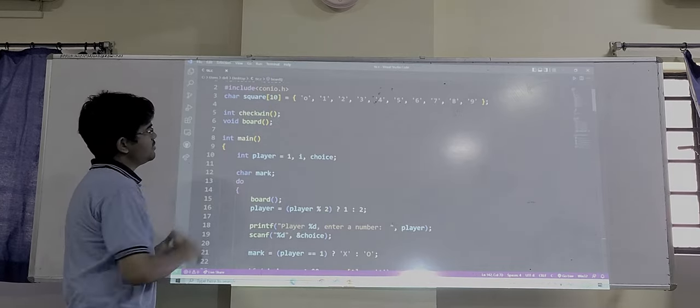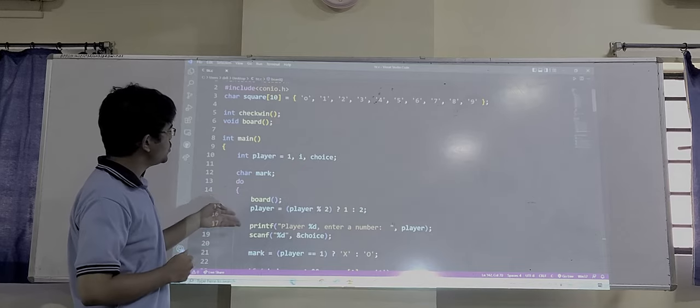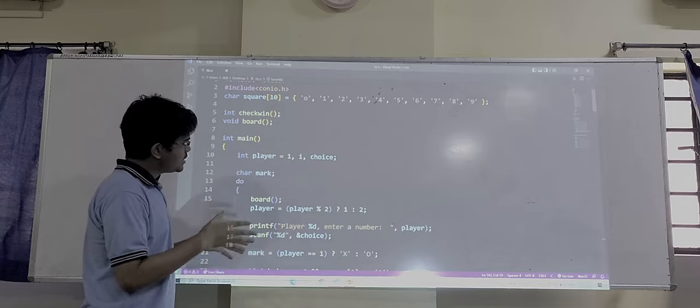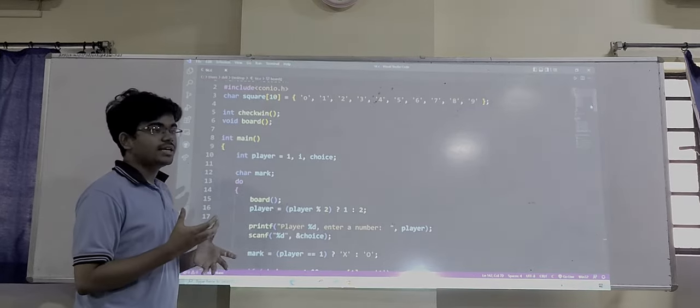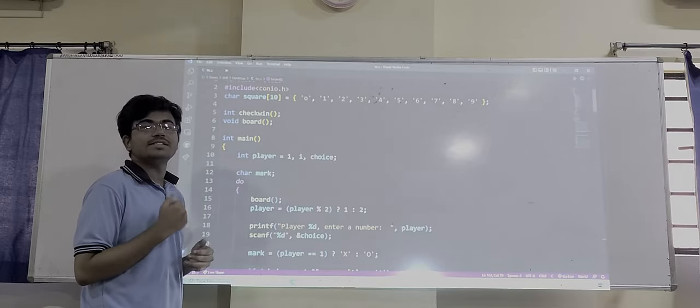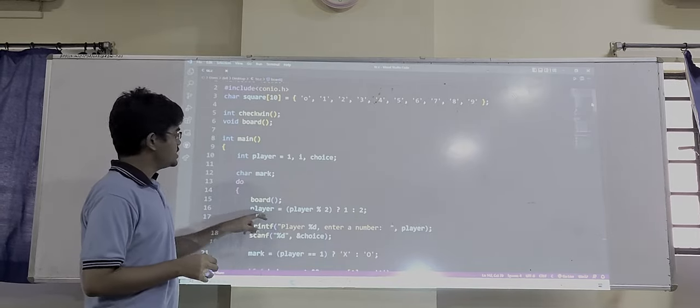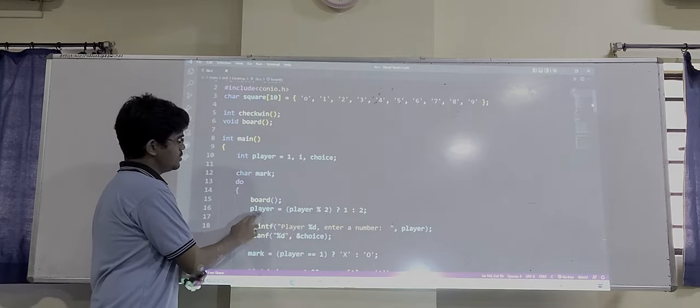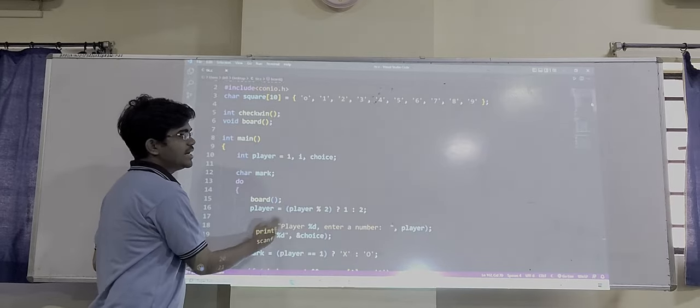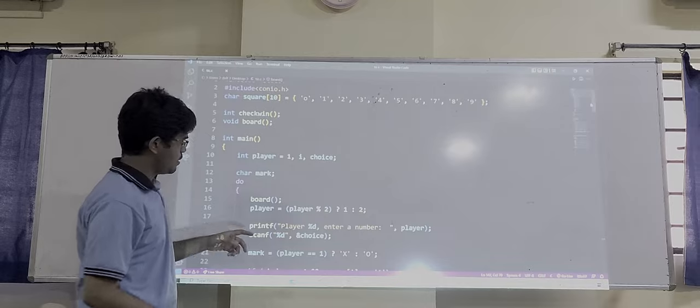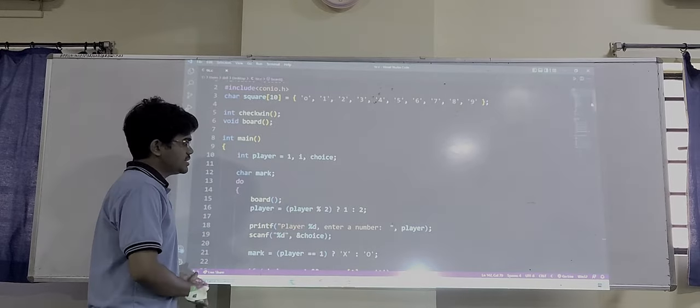Coming to the main function, we will declare the variables, player of integer type and mark of character data type. Inside the do-while loop, we need to assign the player, player 1 or 2. The first player is player 1 and the second player is player 2. Here is the ternary operator. Player equals player modulo 2 plus 1. This is the left-hand side, and right-hand side is player modulo 2, which gives us the remainder. If both sides equals, it is assigned as player 1. If the both sides is not equal, then it is going to assign player 2.